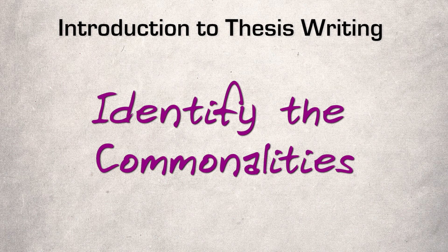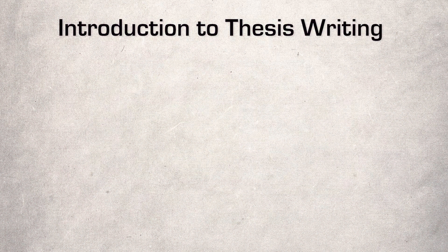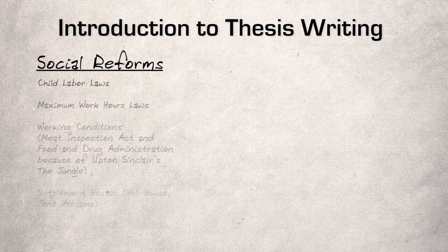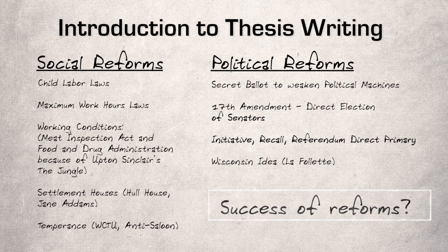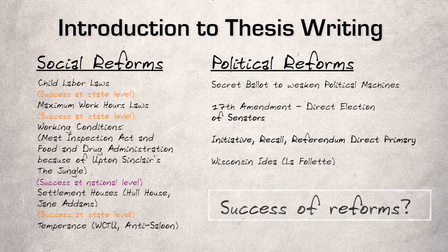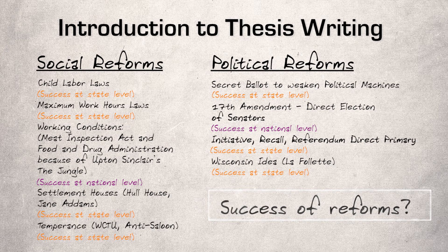Our last step is to identify the commonalities — you'll want to find what your examples or evidence have in common with each other. This can be overwhelming, and it's the most difficult step. So start with the essay topic. In this essay, the topic is the success of reforms, so I will look through my examples and ask myself if each one has been successful. After doing that, my answer becomes more clear. In this case, it seems that there was more success at the state level and more limited success at the national level. I would then incorporate these commonalities into my thesis statement.